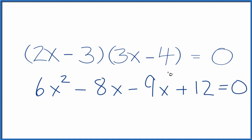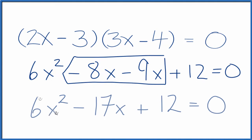So we could then combine these two terms, since they're both x, we end up with 6x squared minus 17x plus 12 equals 0.